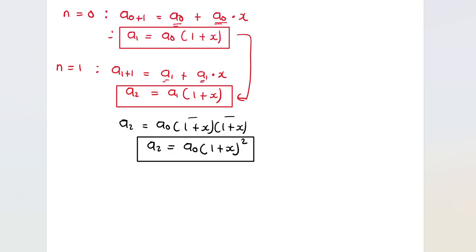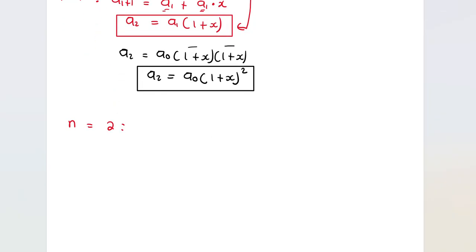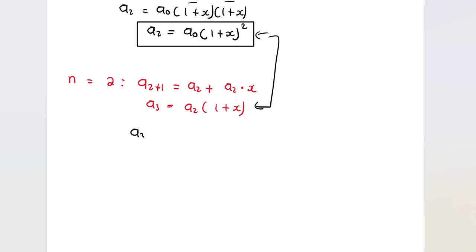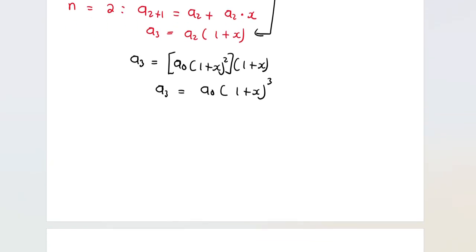Now let n=2: a_(2+1) = a_2 + a_2 * x, so a_3 = a_2*(1+x). I know the value for a_2 from the previous step, so substituting: a_3 = a_0*(1+x)^2 * (1+x). Adding the exponents gives a_3 = a_0*(1+x)^3.